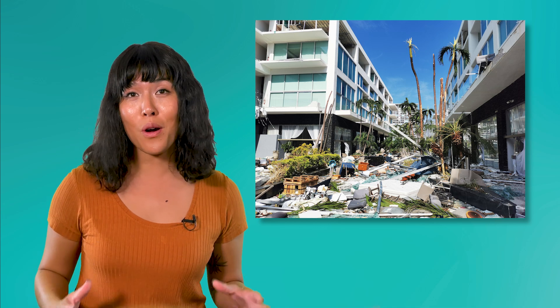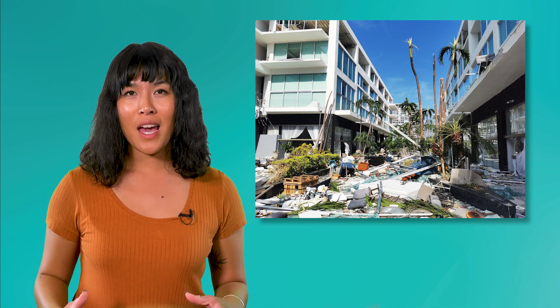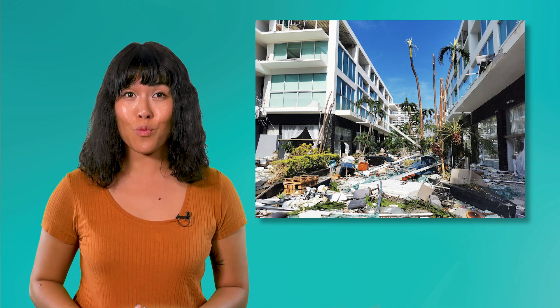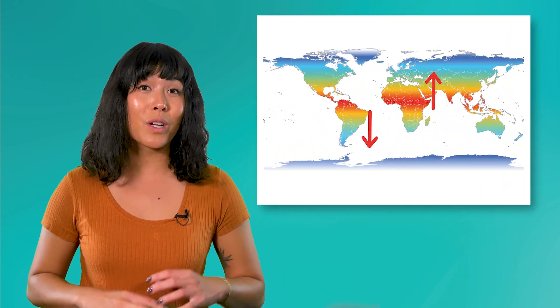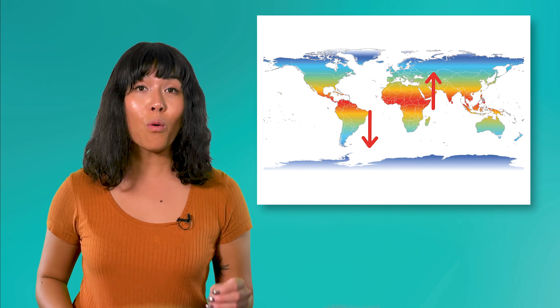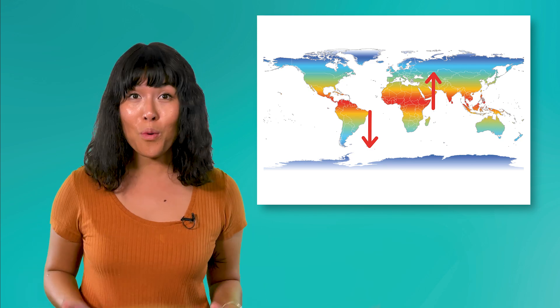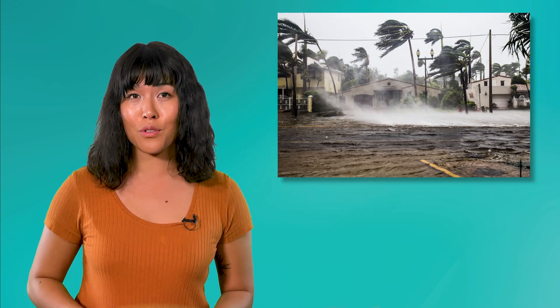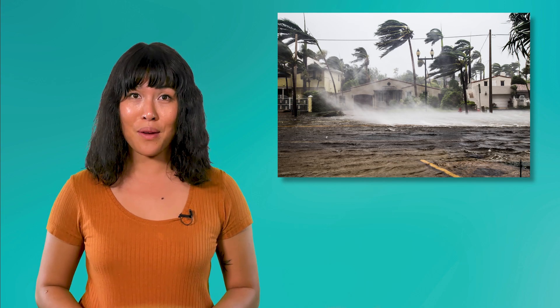Hurricanes form over warm ocean waters and can cause significant damage when they make landfall. They also play a role in the redistribution of heat from the equator to the poles, influencing global weather patterns. They can cause severe weather, including heavy rainfall, high winds, and storm surges, leading to significant impacts on human communities and natural ecosystems.